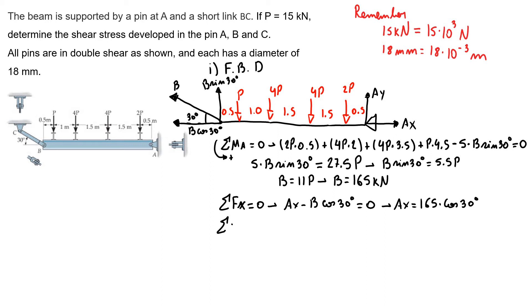My sum of F, B sine of 30 plus Ay minus 11P equals 0. So I have that Ay equals 5.5P. That's the same as 165 times sine of 30. That's 1 over 2.